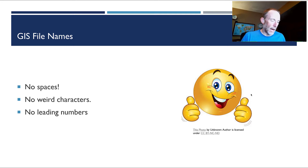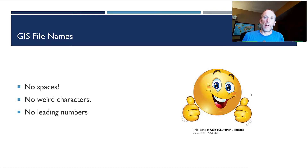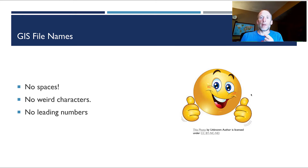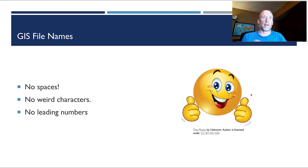So exclamation mark, at symbol, hashtag — all those things. None of those. And file and folder names should not have leading numbers. Don't put a number at the beginning of a file name. You can have numbers within the file name or folder name, but not at the start. That last one — leading numbers — usually doesn't cause a problem, but there are some tools in GIS that will totally crash because of that. So just avoid it.